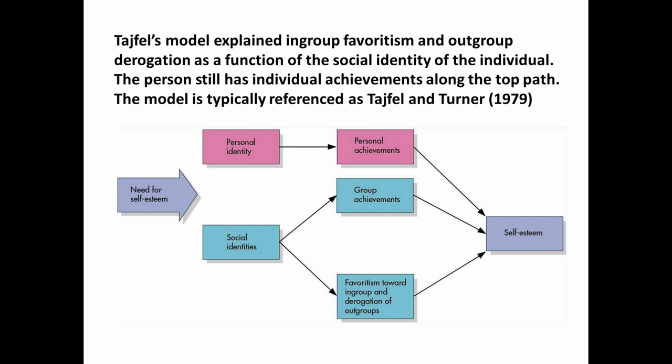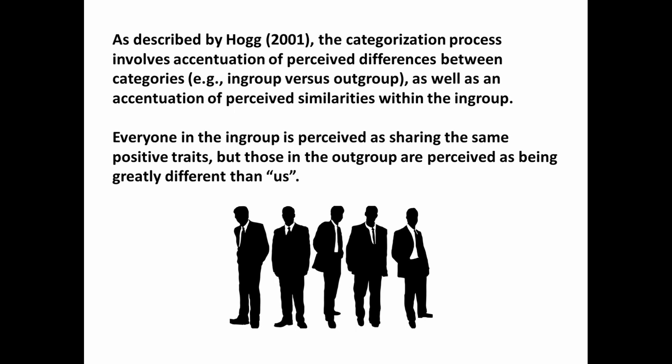After Tajfel passed away, his colleague Turner kept working on the model with new collaborators. Within a short span of time, they developed different versions and companion theories. The traditional theory is known as social identity theory, relating to intergroup relations in terms of favoritism and derogation, but also social categorization theory involving intragroup processes including group salience, group polarization, and group identification. In the original SIT model, self-esteem really runs the entire process — everything is based on self-esteem needs. More recently, research by Hogg has really changed things around in this area.